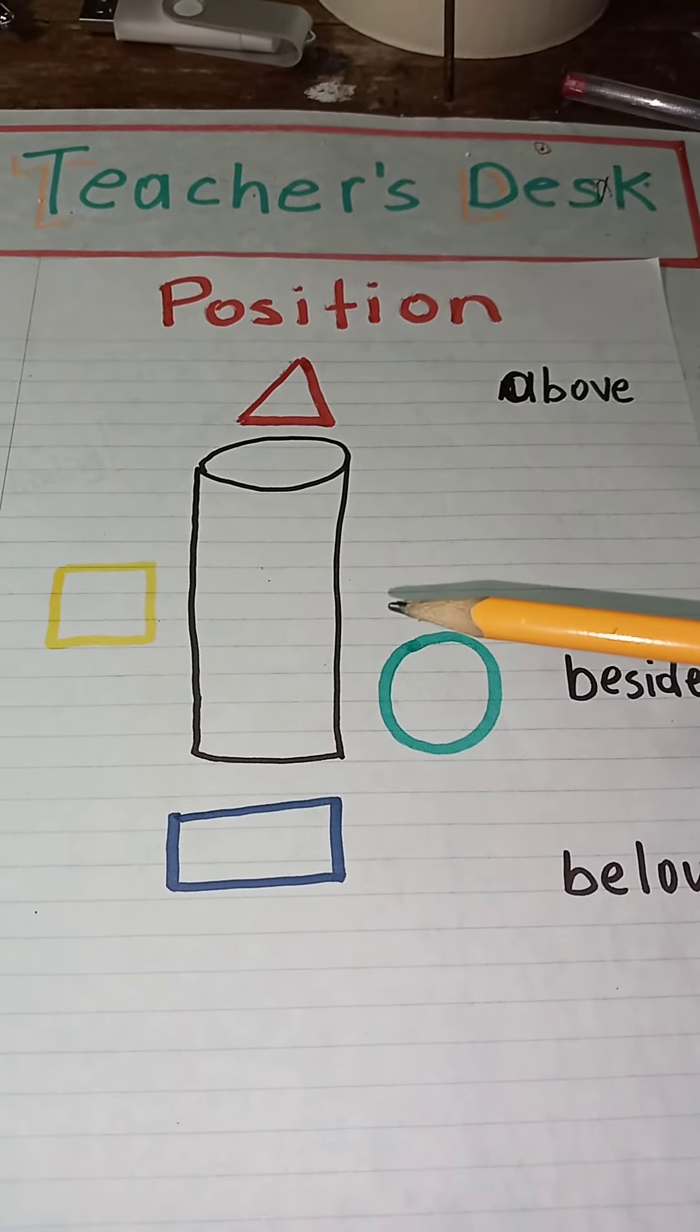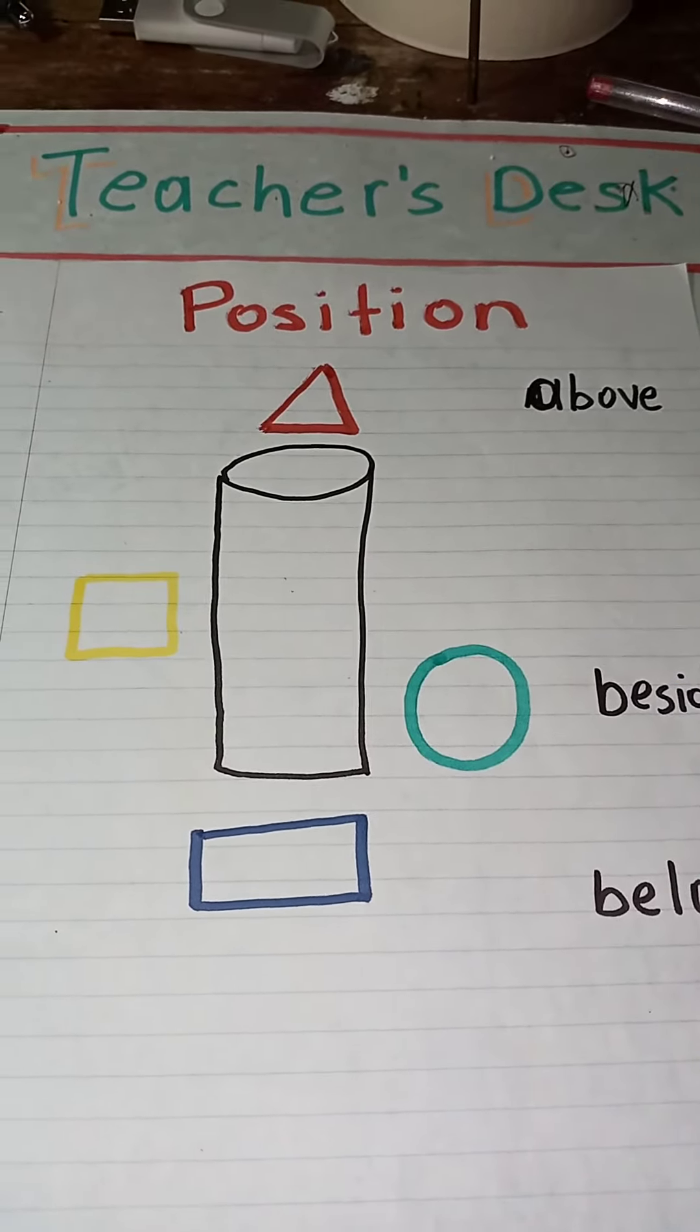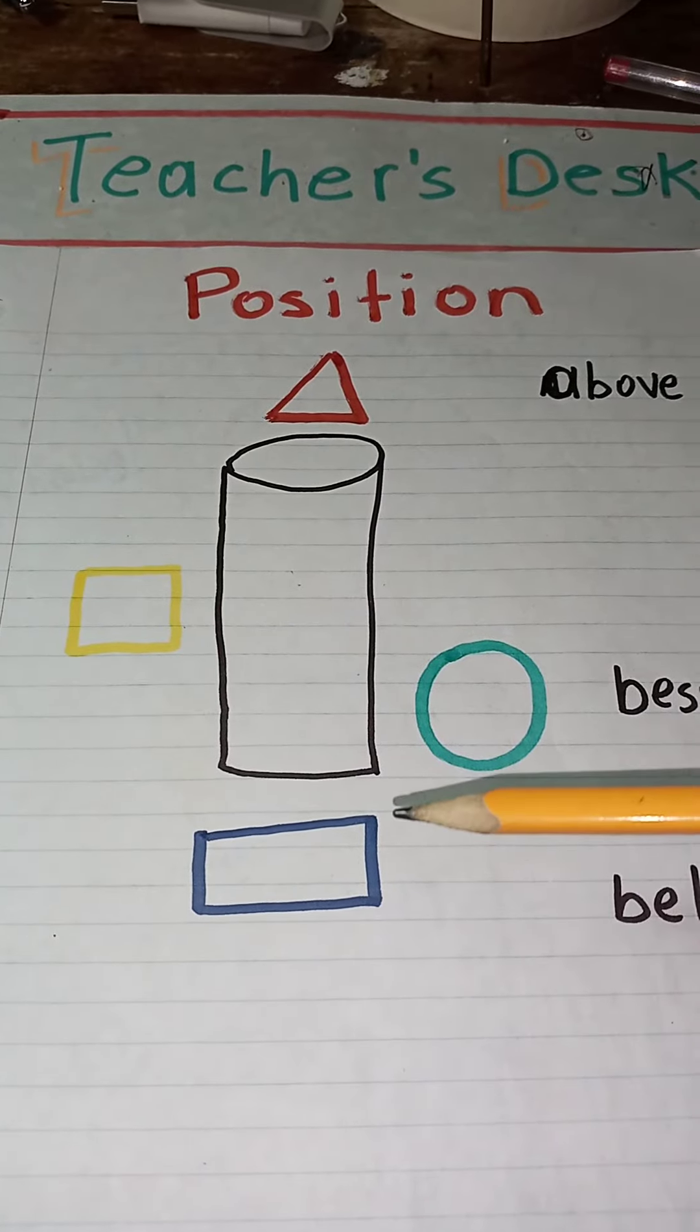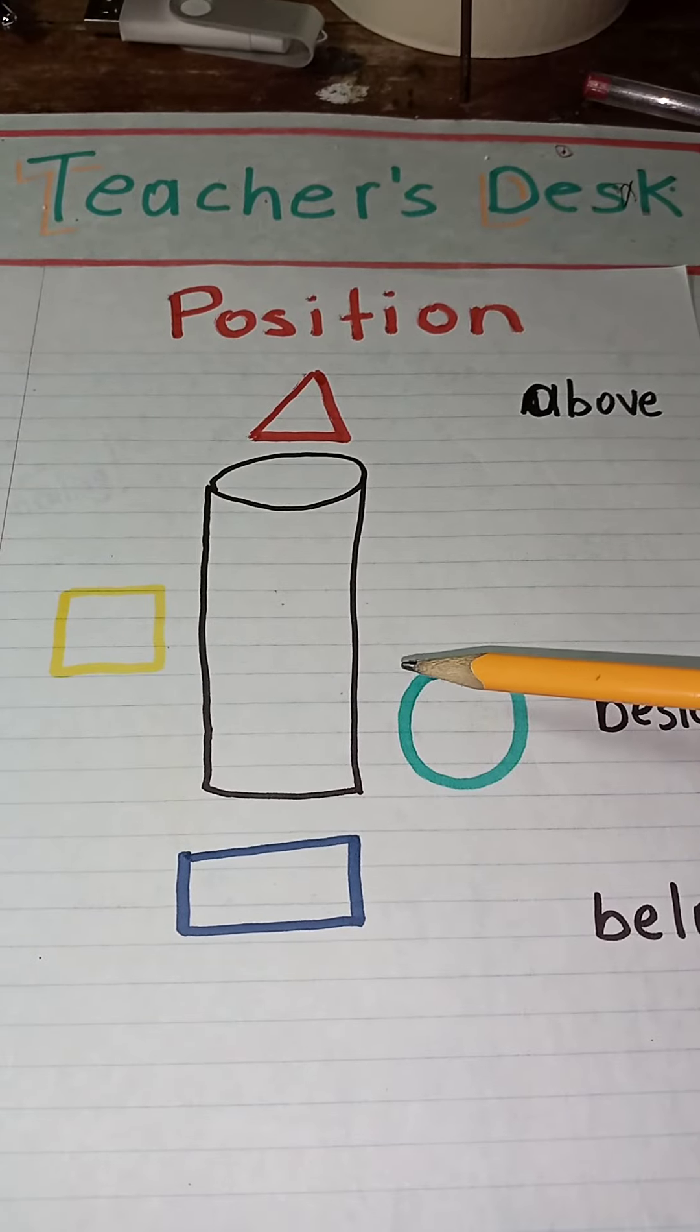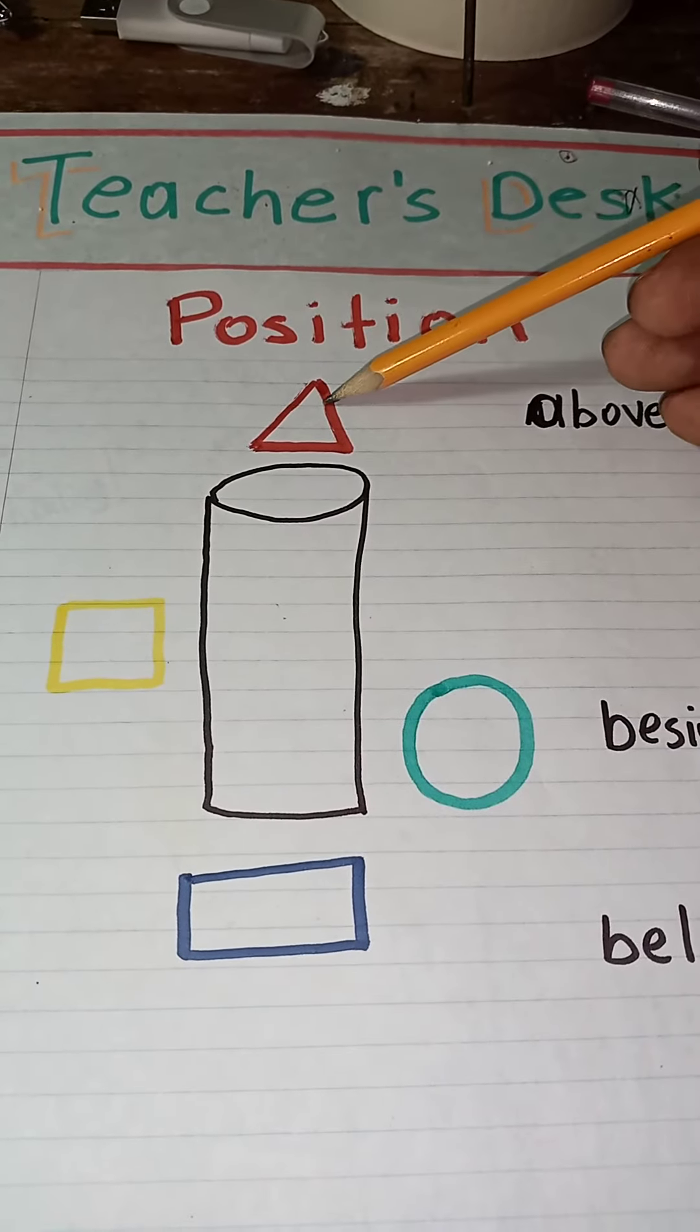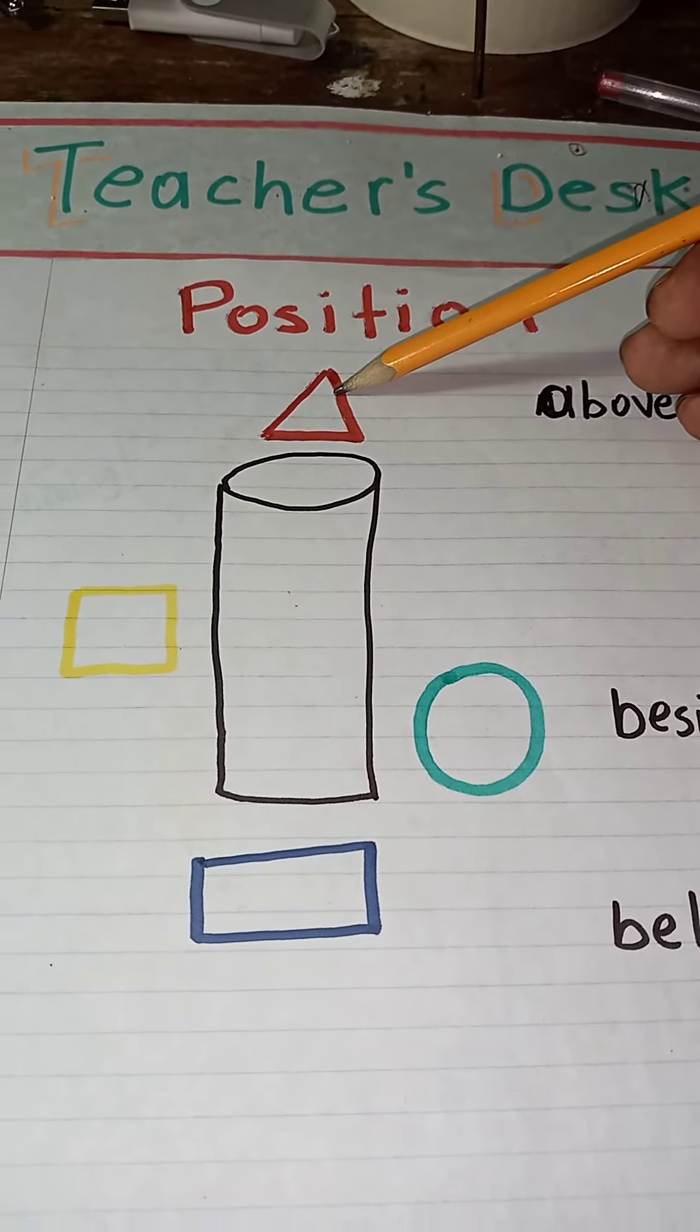These are the positions. The child will know the position. If I say put the pen or pencil on top of the table, the child knows it's supposed to go above it.